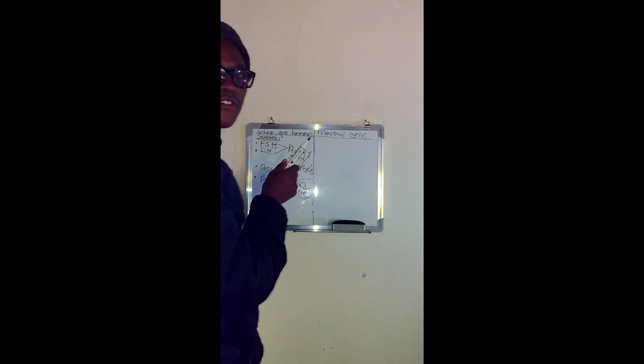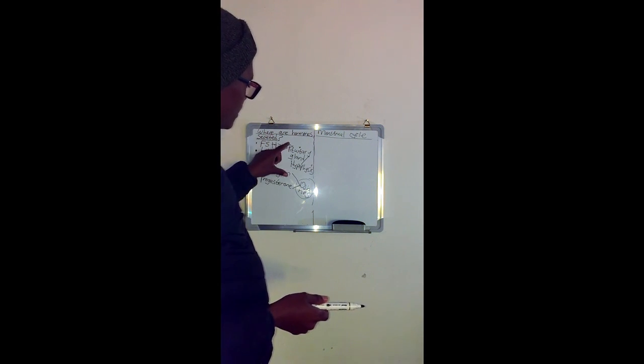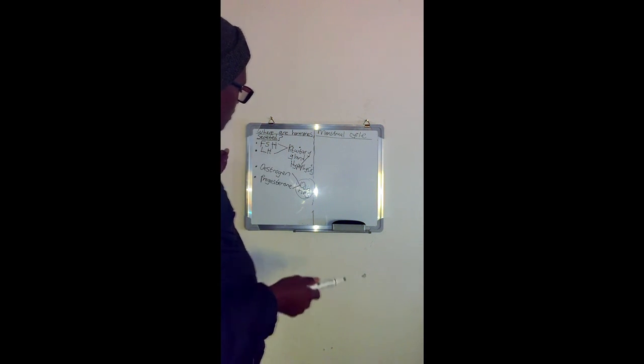Estrogen is secreted by the Graafian follicle, which is one of the mature follicles that has a fluid cavity. The follicles develop in the ovaries, so this Graafian follicle secretes the hormone estrogen. The ovaries secrete estrogen because the Graafian follicle is found inside the ovaries. So these are the locations where these four hormones are secreted from.